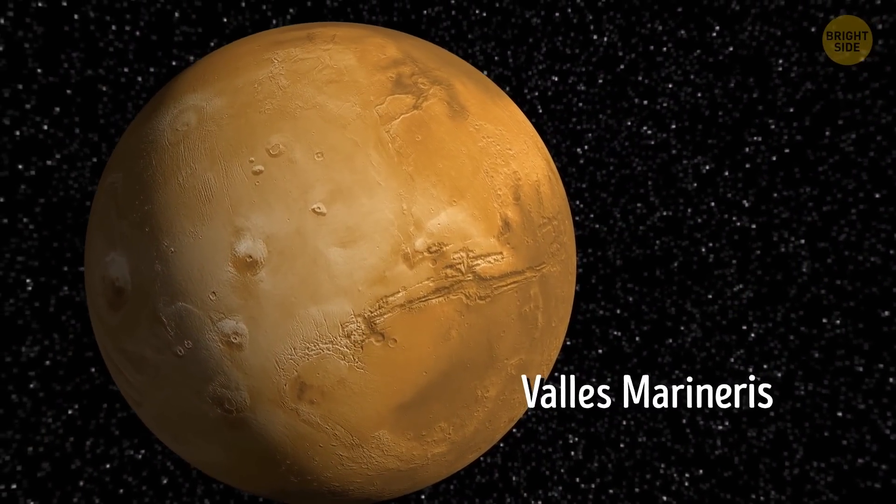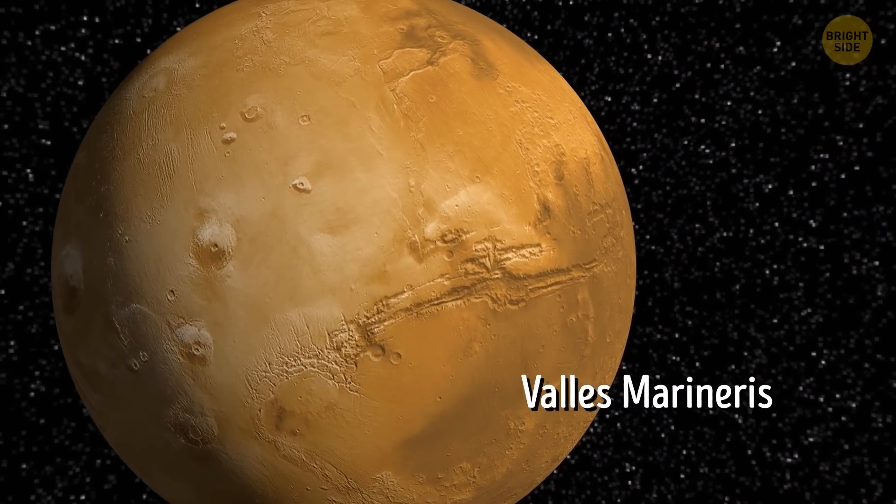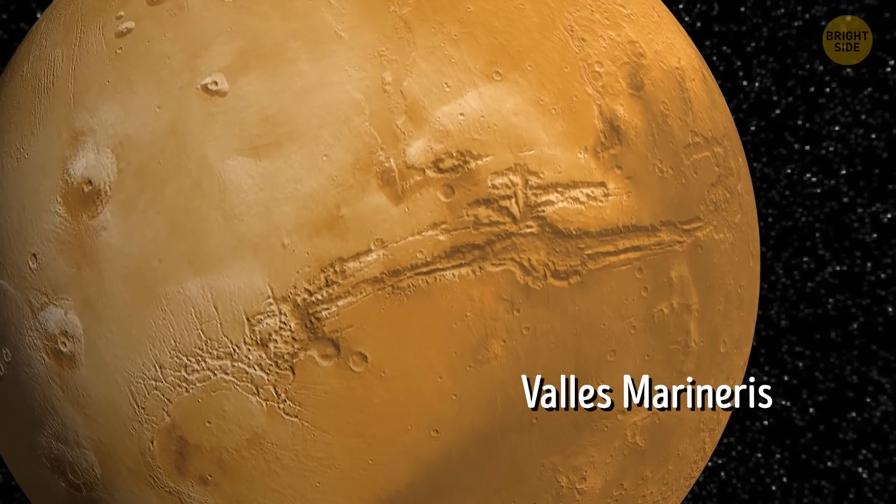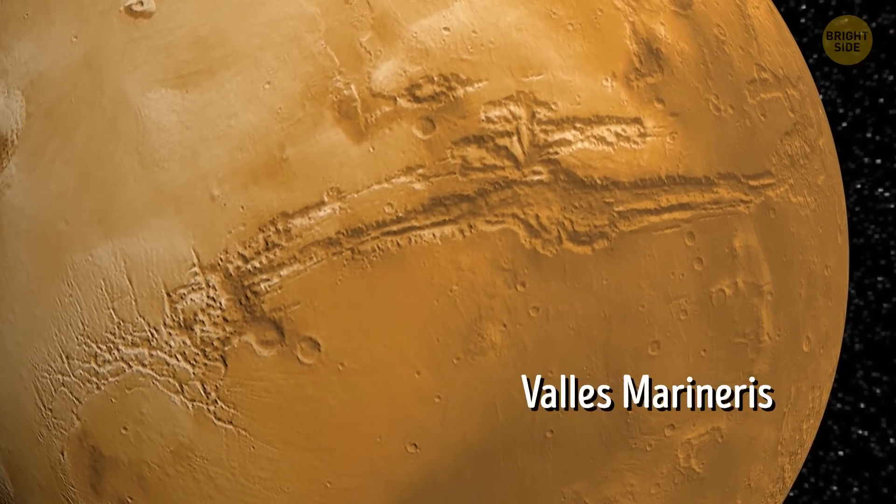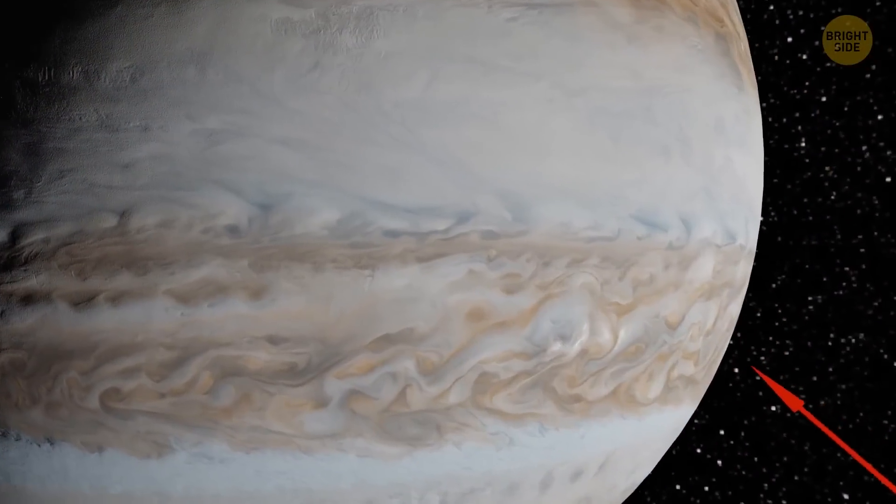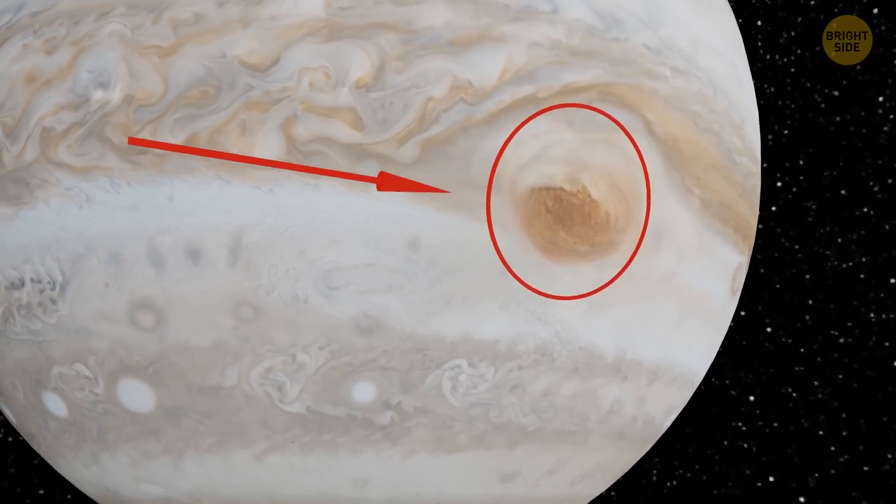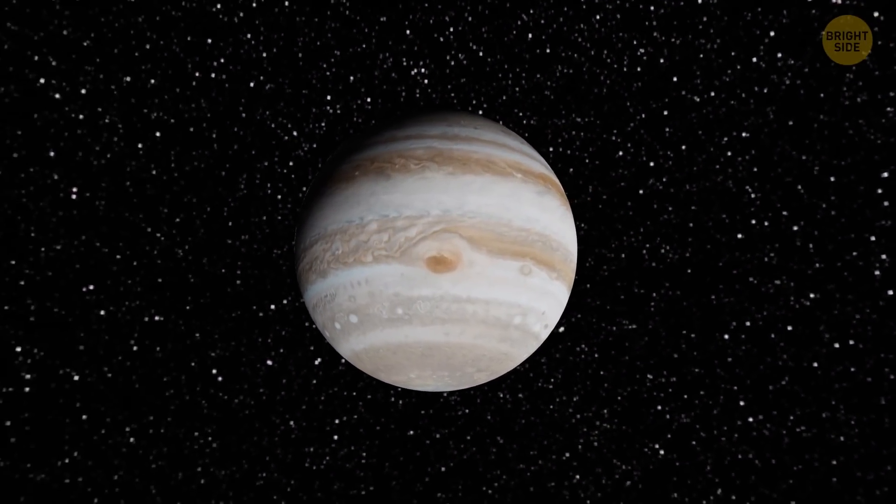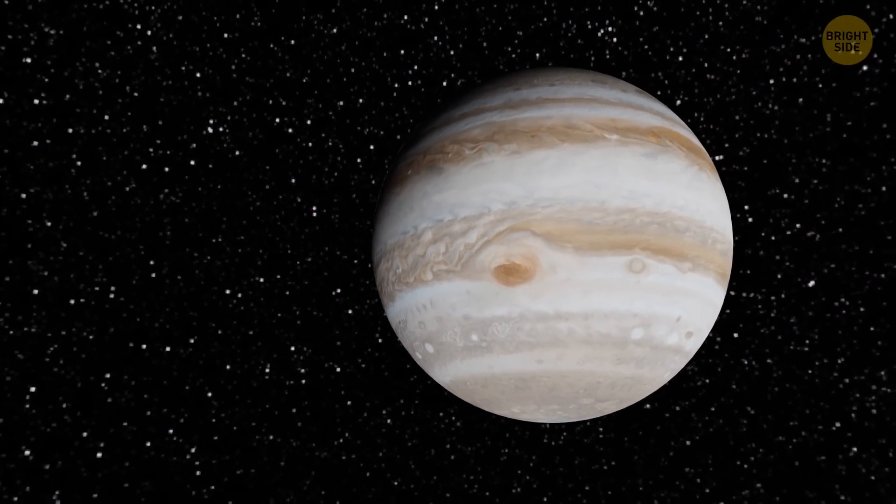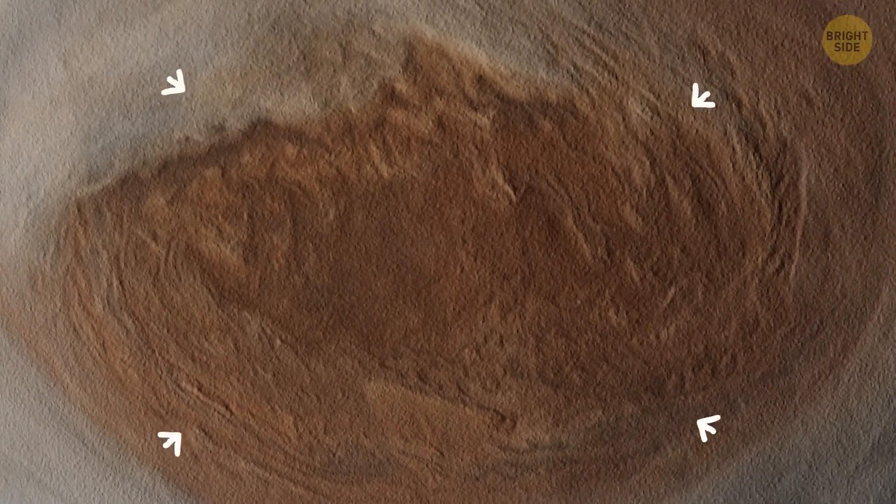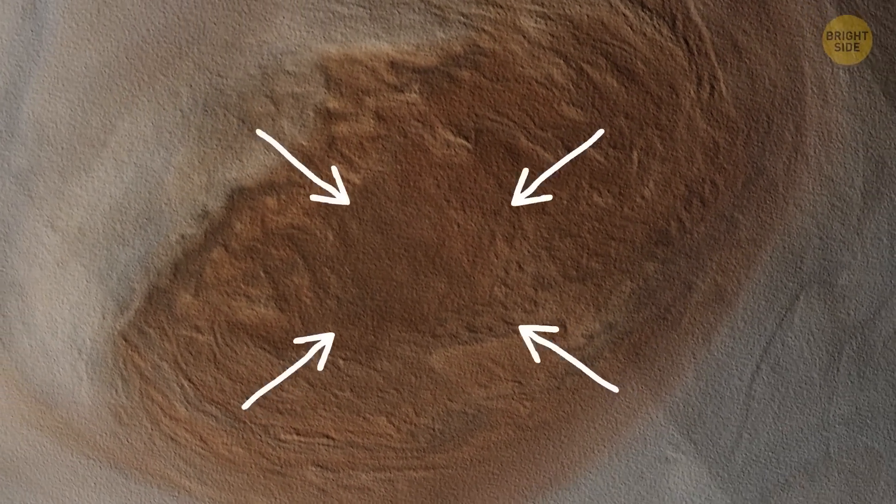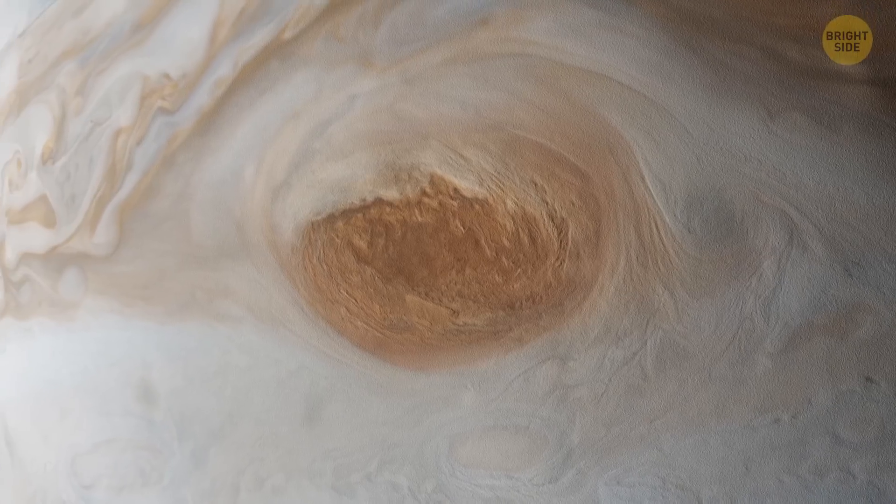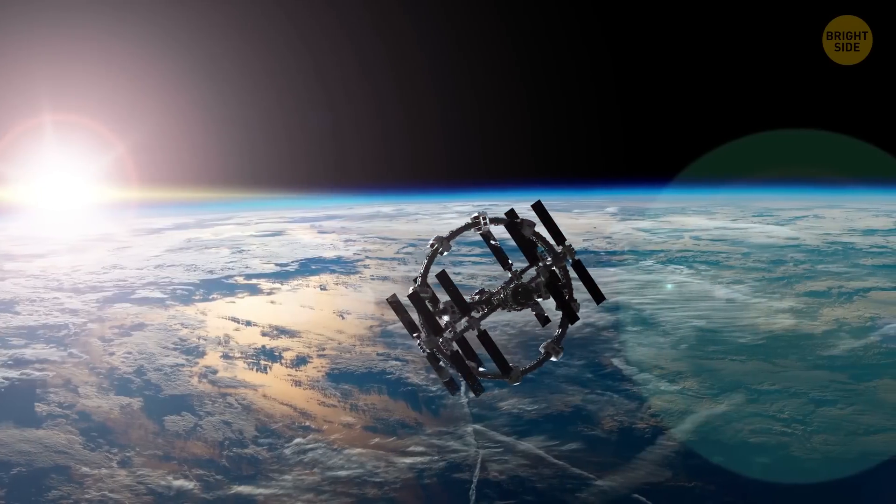The valley called Valles Marineris on Mars is more than 10 times larger than Earth's Grand Canyon. And it's another thing that puzzles astronomers. After all, Mars isn't a planet with active plate tectonics. On the surface of Jupiter, there's a weird region called the Great Red Spot. Recently, astronomers have concluded that this spot is actually a storm that's been raging on the planet for centuries. But some 20 years ago, scientists noticed that the red region started to shrink. Nowadays, it's just half the size it used to be, and still the spot is 1.5 times bigger than Earth.